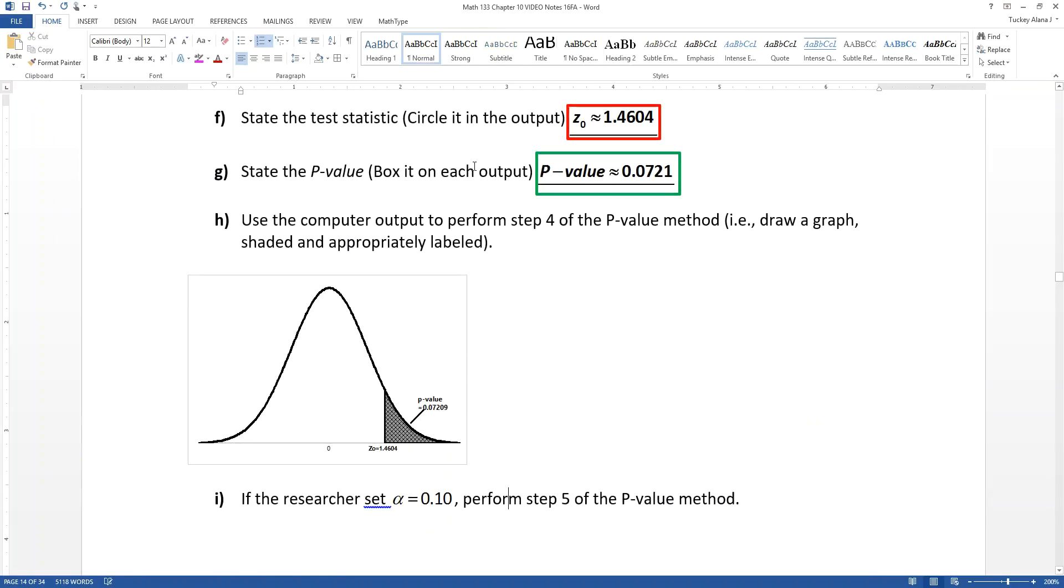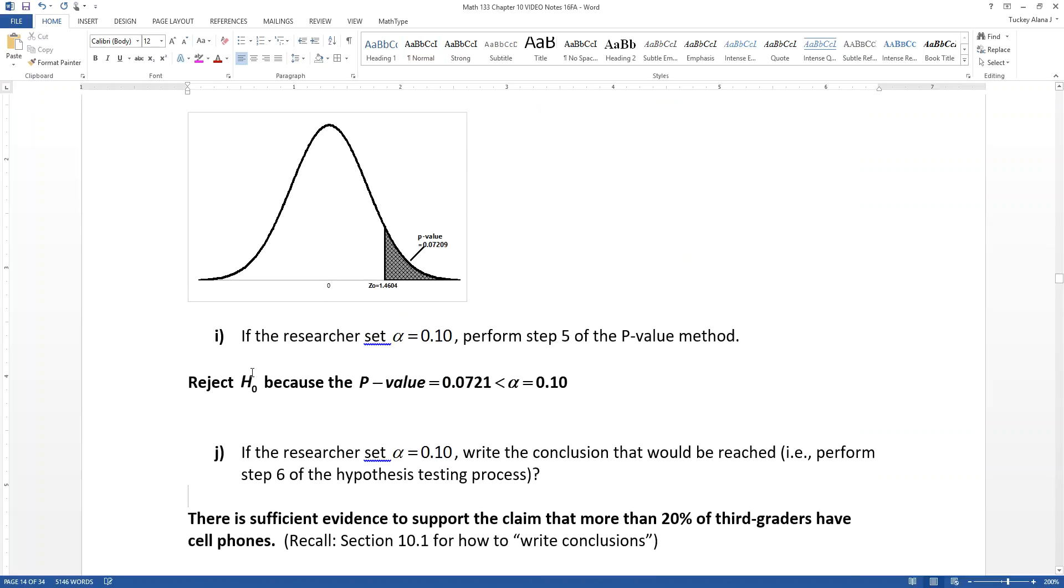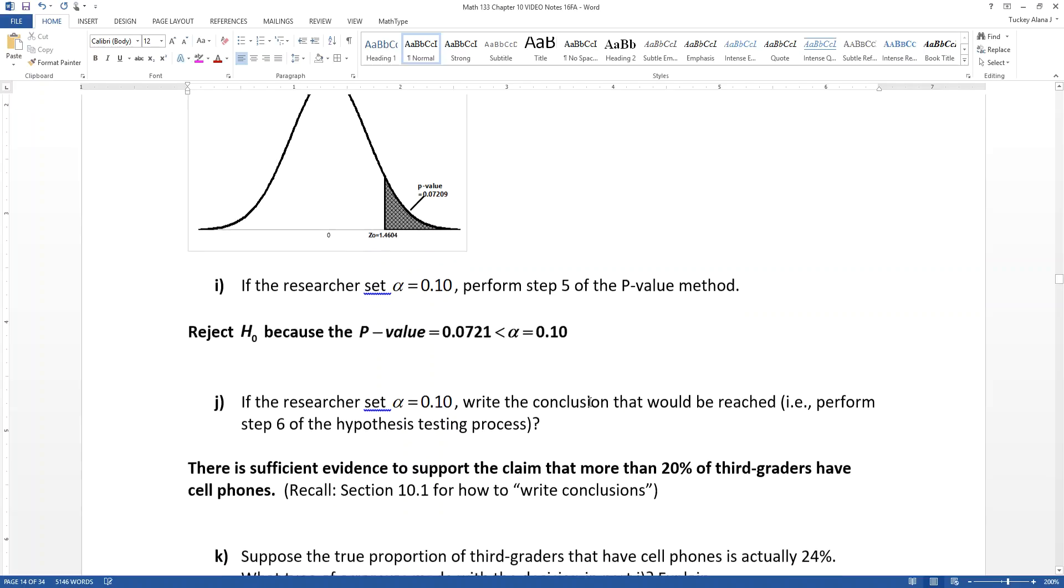Well, what we found had a P value of 0.07. 0.07 is in fact less than our 0.10, which is our alpha. Therefore, we will reject the null hypothesis. So that means we make the decision to reject the null hypothesis because our P value of 0.0721 is in fact less than our alpha, which is 0.10.